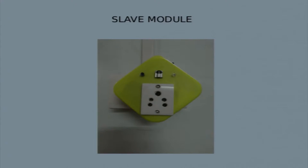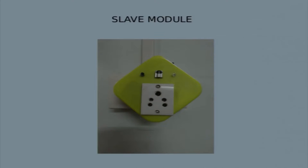This is the slave module we have prepared. The front view shows that the back end has three male pins which directly go into the wall socket. On the front end, any electrical appliance like a refrigerator or laptop charger can be connected. The slave module has a T-SOP receiver to receive IR signals from the master module and also an IR transmitter to send acknowledgement back indicating whether the appliance has been turned on or off.